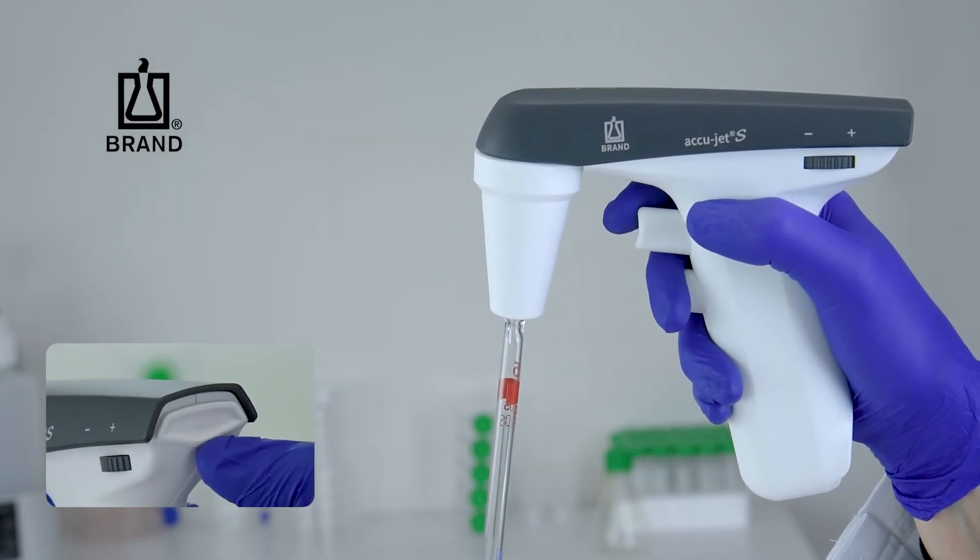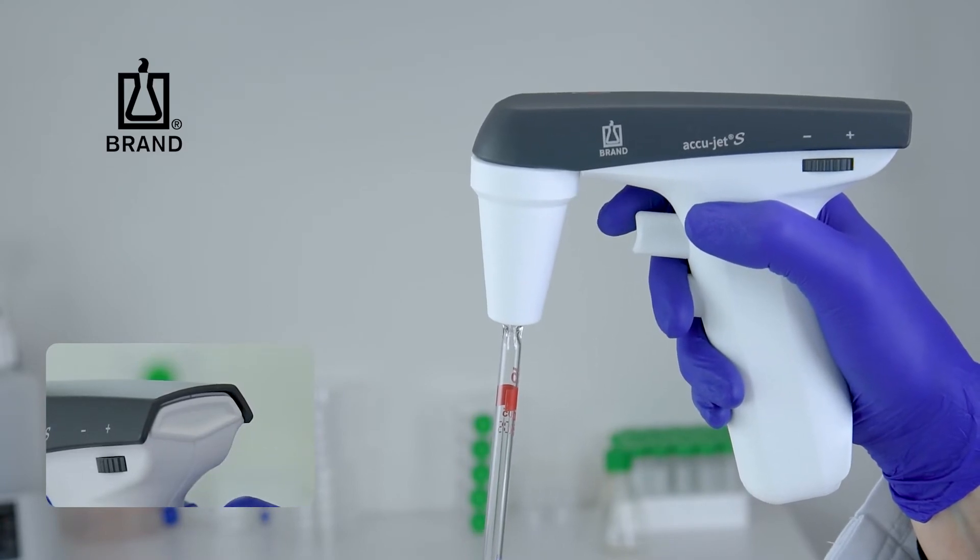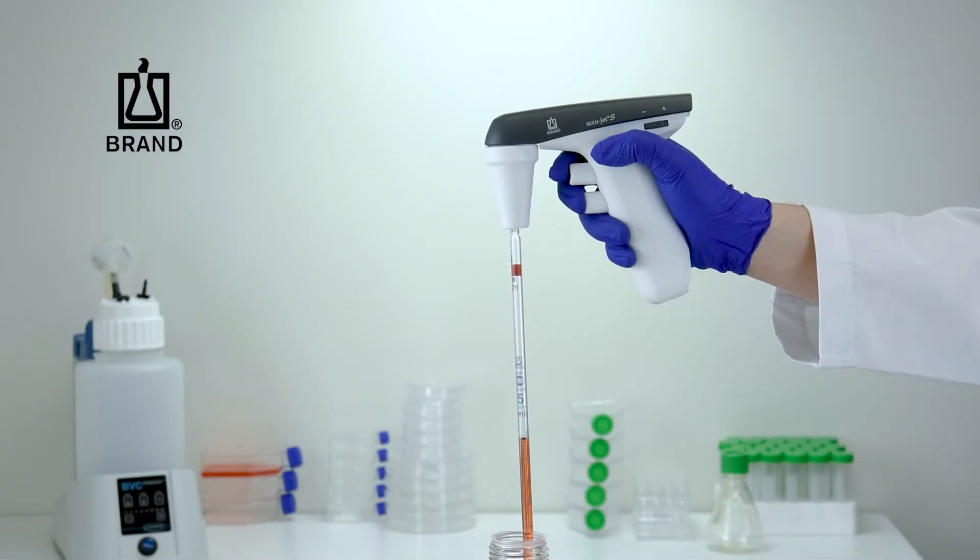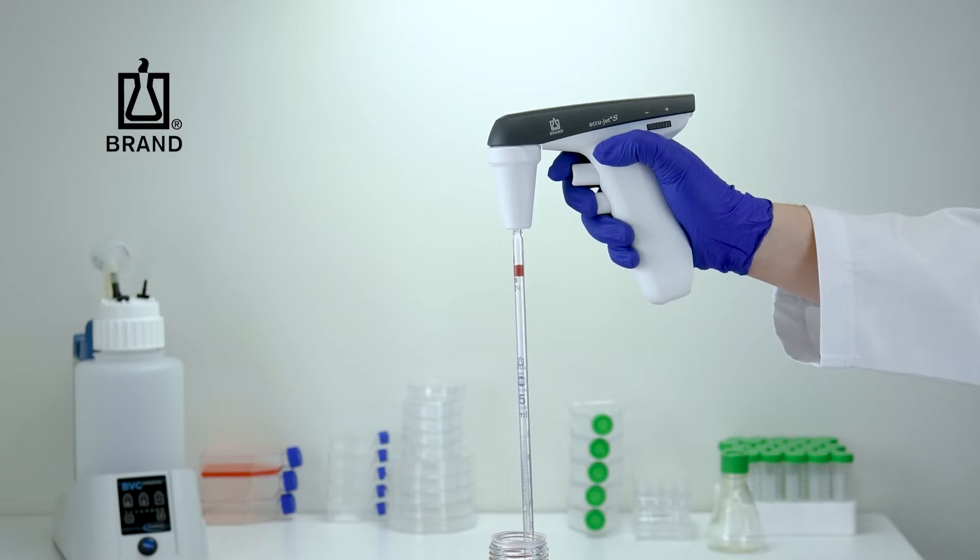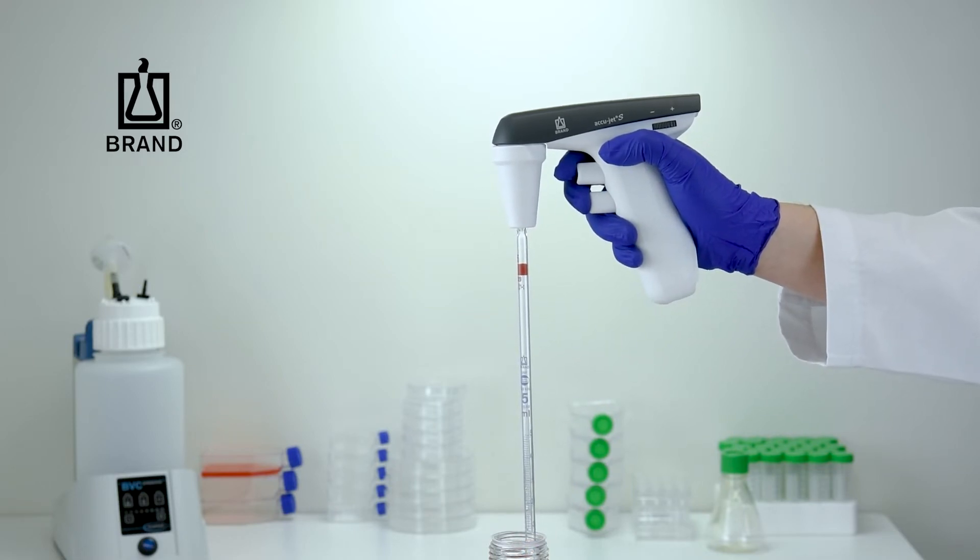With the mode selection switch in the upper position for Gravity Delivery, press the lower pipetting button. The AccuJet S responds by allowing liquid to dispense freely under gravity.